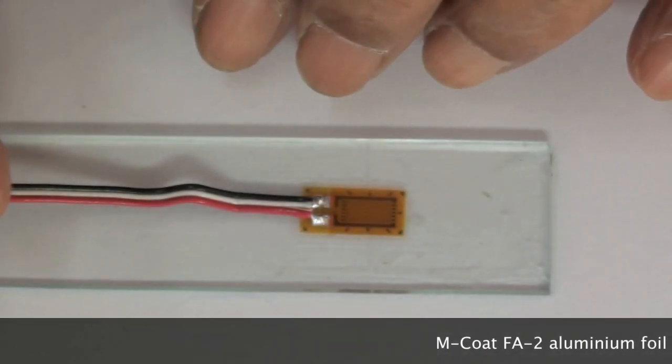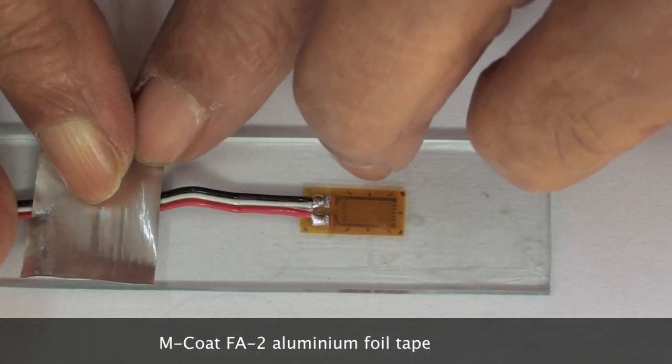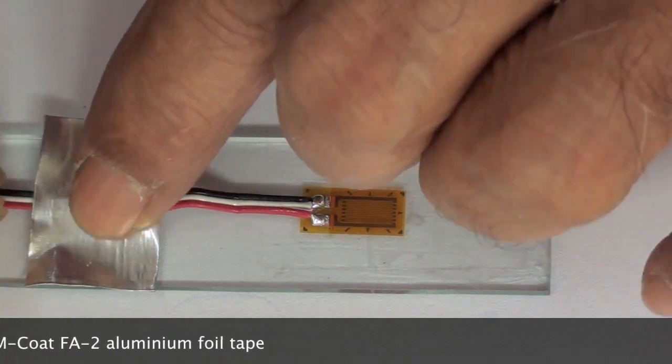The lead wires are then anchored to the test part with FA-2 aluminum foil tape which has a strong adhesive backing.